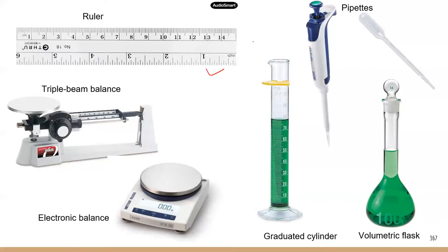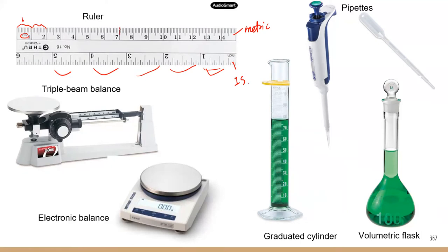This is a ruler. You can see this is the metric side and this is the imperial system side — these are inches. On the other side, you can see it's labeled centimeters. This space here is one centimeter, and the even smaller space from here to here is one millimeter — it's a very, very small length. That's for measuring length.